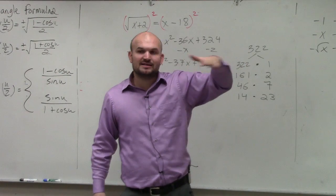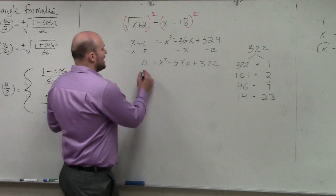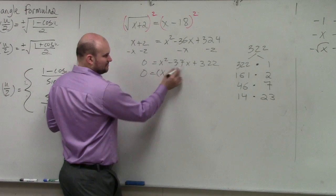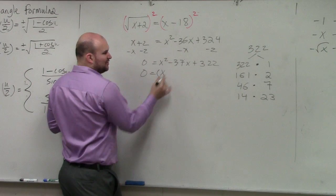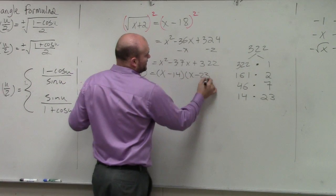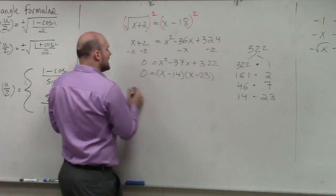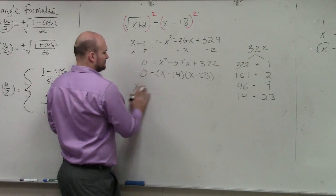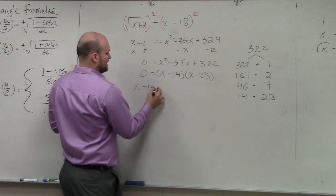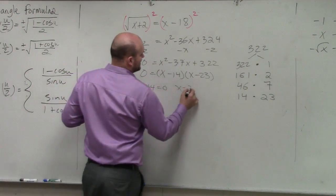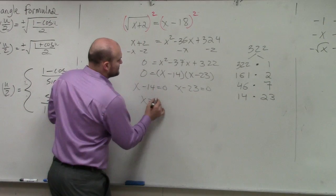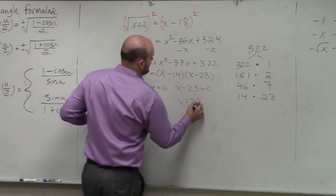So now I can factor this. I know that they both have to be negative: x minus 14 times x minus 23. Now I apply the zero product property: x minus 14 equals 0, and x minus 23 equals 0, giving x equals 14 and x equals 23.